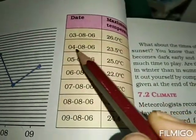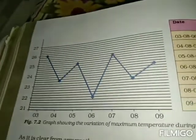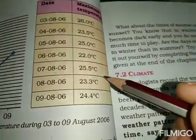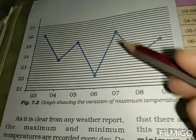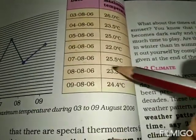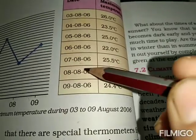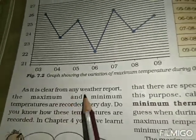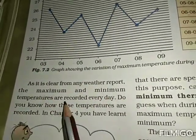As is clear from any weather report, the maximum and minimum temperatures are recorded every day. Do you know how these temperatures are recorded? In chapter 4 you learnt about thermometers — laboratory thermometer and clinical thermometer. There are special thermometers for this purpose called the maximum and minimum thermometers.